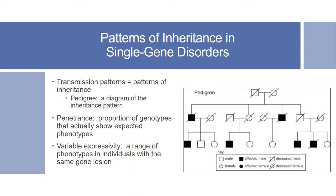Transmission patterns are the same as patterns of inheritance. There are patterns that follow Mendel's model and some that do not, called non-classical patterns. Some terms to know related to transmission patterns are penetrance and variable expressivity. Penetrance refers to the proportion of genotypes that actually show expected phenotypes, and variable expressivity refers to a range of phenotypes seen in individuals with the same gene lesion or gene mutation. The image shown is an example of a pedigree that diagrams the inheritance pattern, which you may see with paperwork accompanying genetic specimens in the lab.